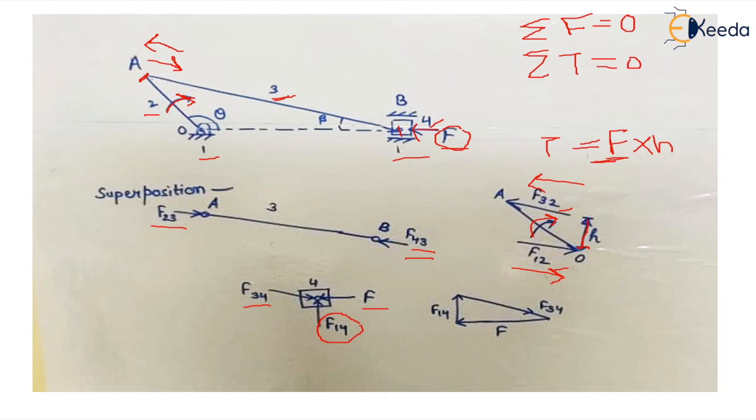We start by drawing a vector diagram. We know the magnitude and direction of F34 and F14, so whatever the resultant is, that will give the value of the externally applied force.